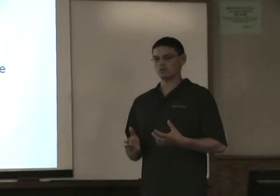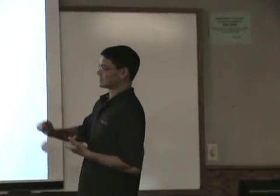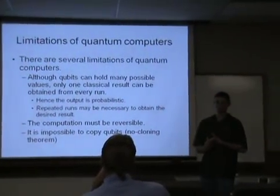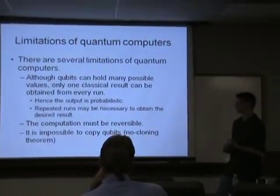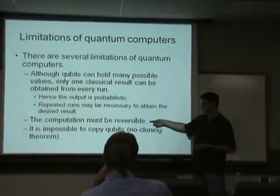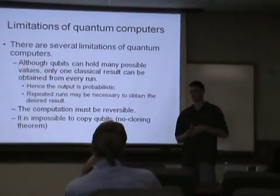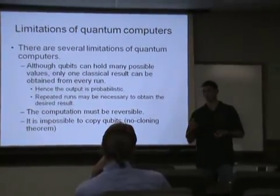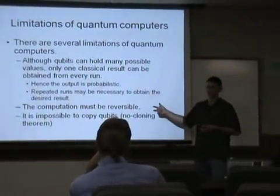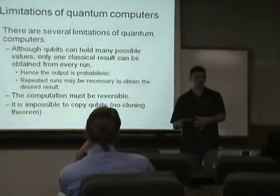So quantum computers sound cool. You can represent multiple numbers at the same time, but there are several limitations. As I was just alluding to, you can have many possible values being represented, but really you can only extract one answer. And that answer, you obtain probabilistically. So one run, you may get one result, another run, another result. The computation has to be reversible. This has to do with physics. Basically, every time you erase information, that requires energy. And so if you had an AND gate, say, and the result is zero, you don't know what those inputs are. So it takes energy to erase that state. And the quantum computer has to be reversible because that input of energy basically acts as an implicit measurement and then collapses you down to that one single result.